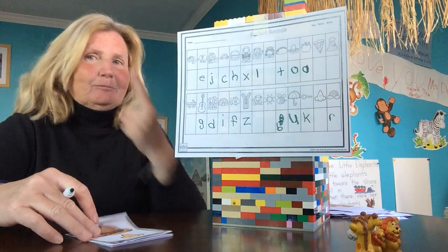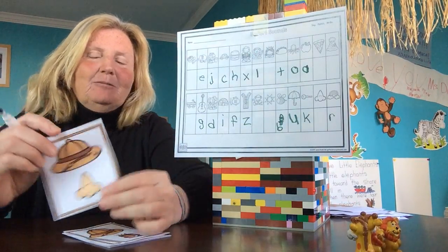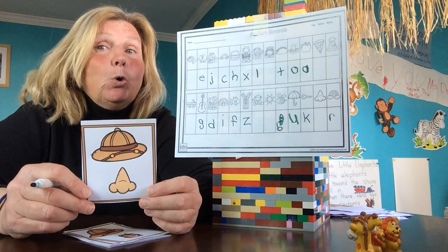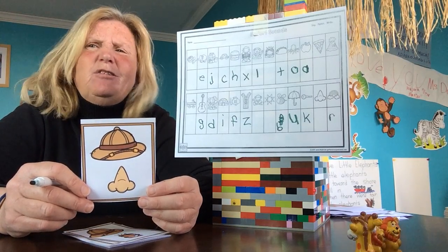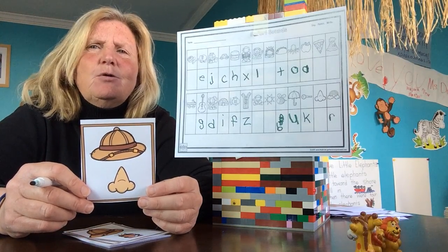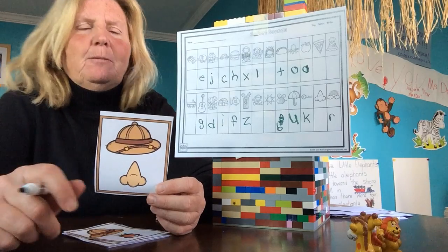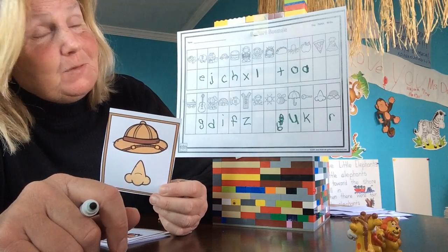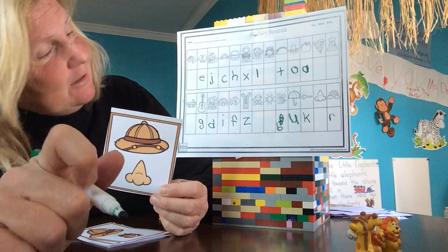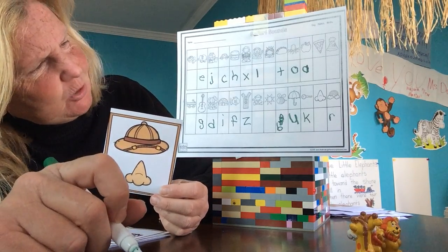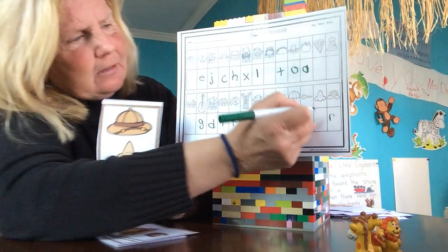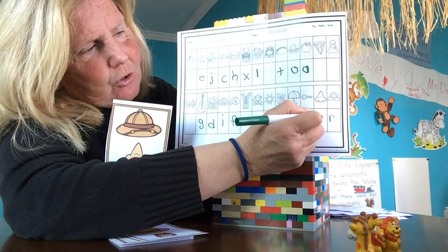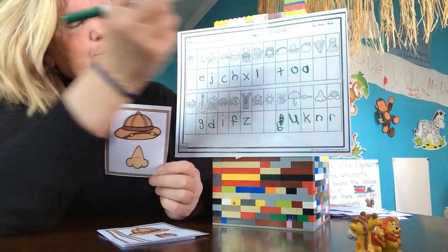What's this thing, what do I got? Nose. What does nose start with? You got it — N. Where's my nose? Nose. Perfect.